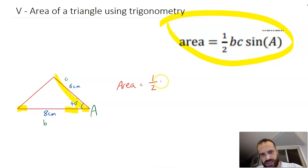All right, so half B. So B is 8 and C is 6. And then sine A and A is 40 degrees.